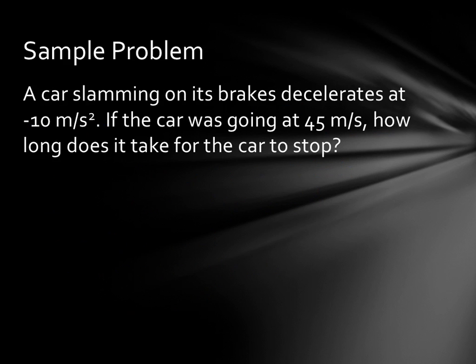And just to get one more practice problem, a car slamming on its brakes decelerates at negative 10 meters per second squared. If the car was going at 45 meters per second, how long does it take for the car to stop? So, in this case, our knowns, we know that a equals negative 10 meters per second squared. We know that it was going at 45, and it's going to go to a stop. So, that means our initial velocity is 45, and our final velocity, since we're stopping, is 0. And our question mark is t.